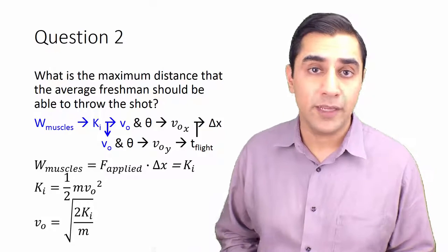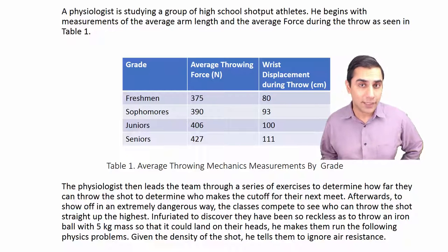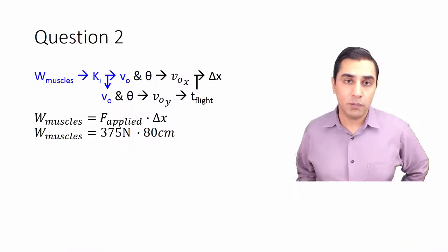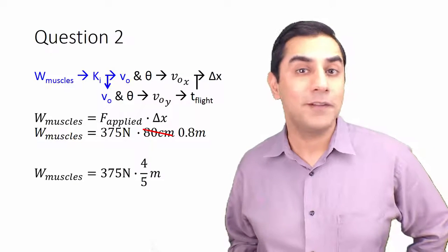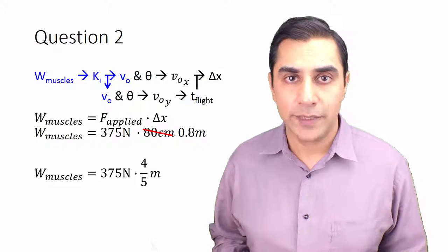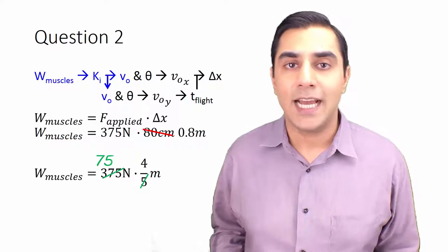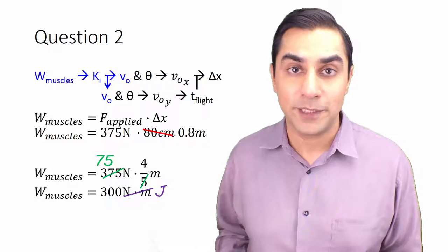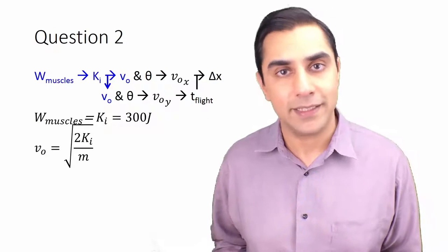Now that we've got all our algebra out of the way, we can plug and chug. Looking back at the passage, the average freshman can apply 375 newtons of force during the throw, and during that throw they displace their wrist — and thus the shot — an average of 80 centimeters, or 0.8 meters, or 4/5 of a meter. Keeping numbers in fractional form is useful because it allows you to simplify and cross out. 5 divides the numerator nicely, giving 75 newtons times 4 meters. 300 newton-meters equals 300 joules — the work done by the freshman's muscles and the initial kinetic energy of the shot.